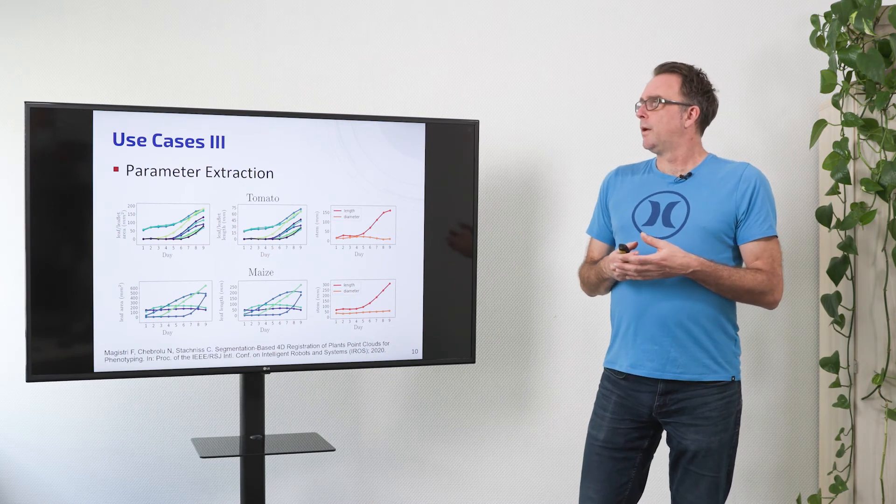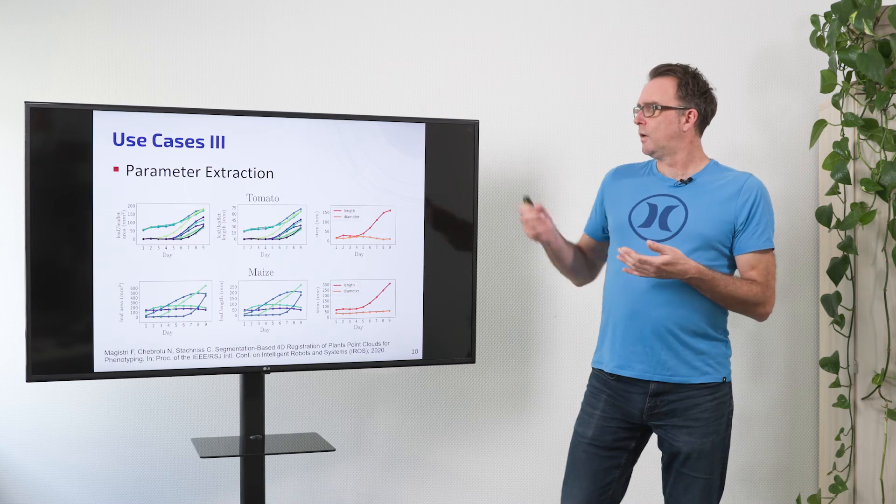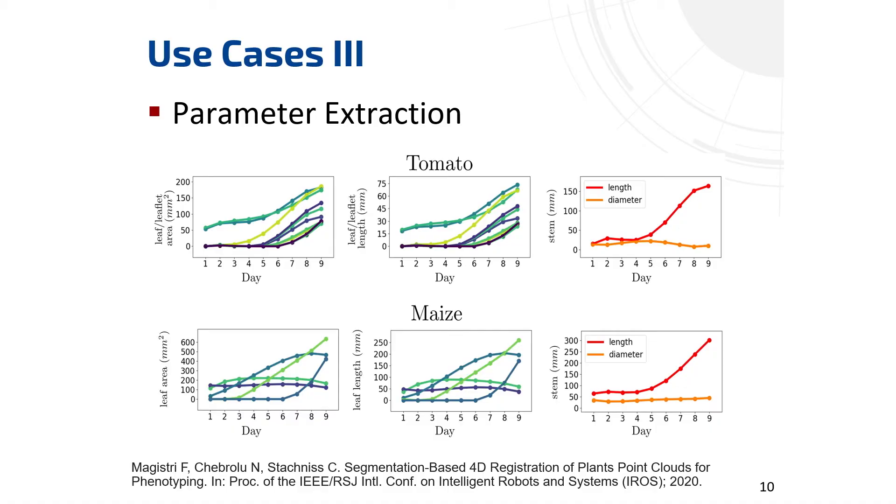In the third step which is then based on the second case we then extract the different properties of the plant parts like the leaf length or the leaf area or the stem length and can plot it over time so that you can see how these parameters evolve over time.